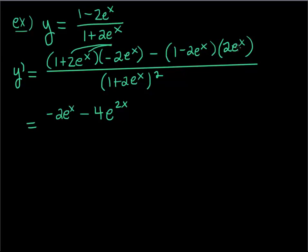Then I'm going to take this -2e^x through and I'm going to take this negative through as well, so I get -2e^x and then this becomes a + 4e^(2x).